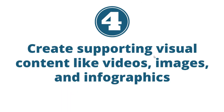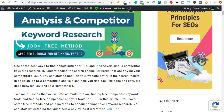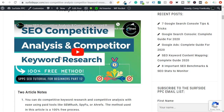Number four is to create supporting visual content like videos, images, and infographics. Personally, I do better with creating videos and publishing them to my YouTube channel — that's my number one priority. The other thing I try to do is create blog posts for a lot of my different videos and also create supporting images as well. So when people need to see screenshots of how to do certain things, or if I can create an infographic to give a quick overview, that helps. For a quick example, on my website surfsideppc.com, if you come to the article 'SEO Competitive Analysis and Competitor Keyword Research'...